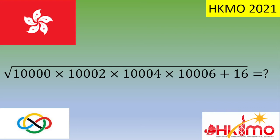Hello and welcome. In this video, we have an exercise given during the Olympiad in Hong Kong in 2021. The exercise asks you to calculate the square root of 10,000 times 10,002 times 10,004 times 10,006 plus 16.